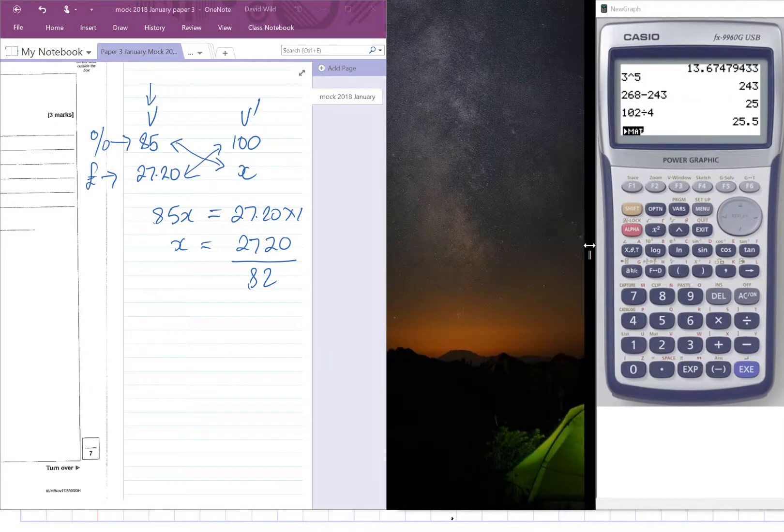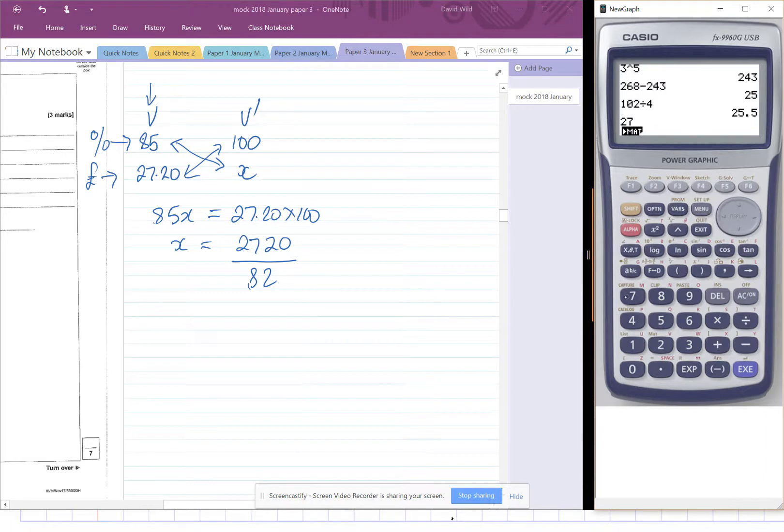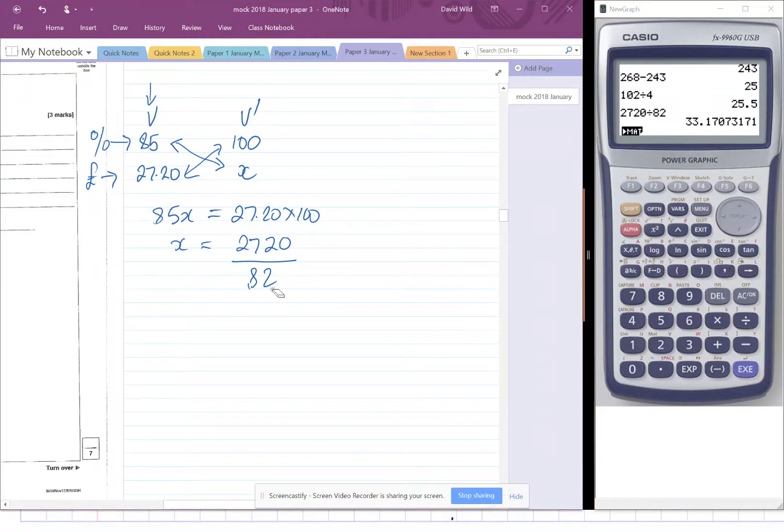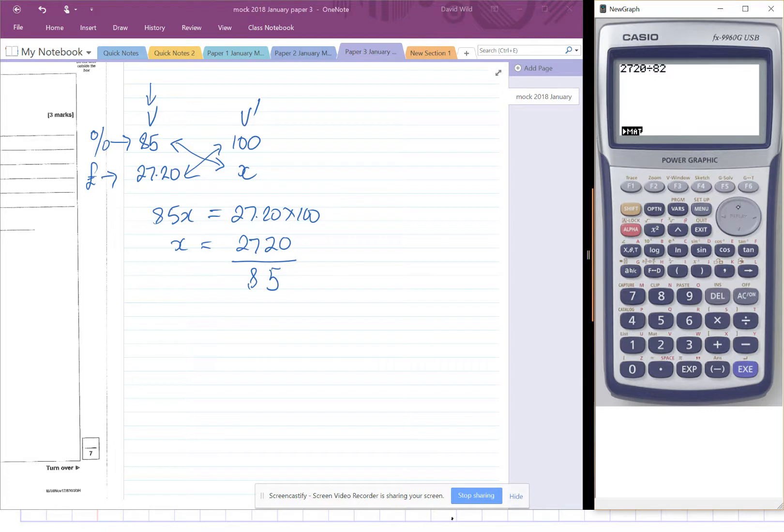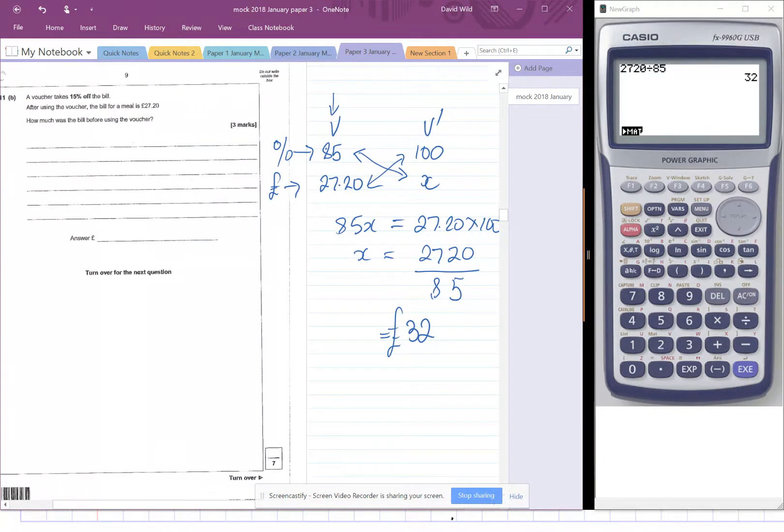Calculator. And we've got 2720, divided by 85. And we get... What did I type that in right? 2720, divided by 85. I think that's right. 85, sorry. Let's just delete that. And that's 32. That's better.